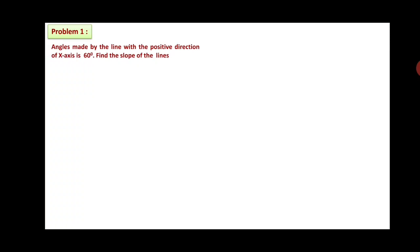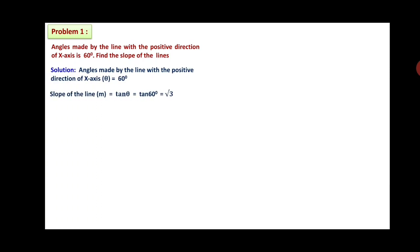Problem 1: The angle made by the line with the positive direction of the x-axis is 60°. Find the slope of the line. Here θ = 60°. Therefore slope M = tan θ = tan 60°. From the trigonometry table we already learned, the value of tan 60° is √3. So the slope of the line is √3.